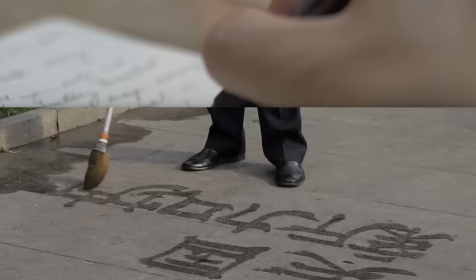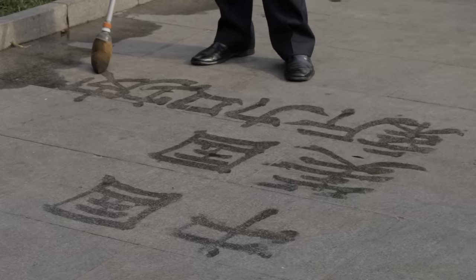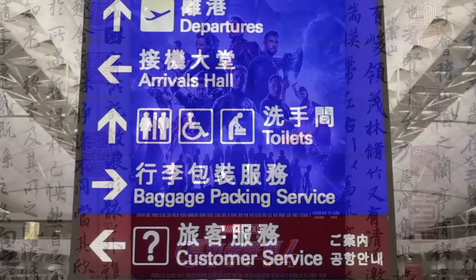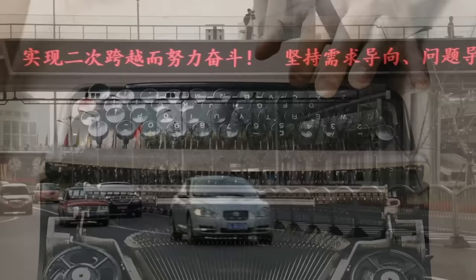In Chinese, on the other hand, how you write a word has nothing to do with how you pronounce it. Instead, each word is represented by a single character, or in some cases a combination of two or three. Because just about every word has its own squiggly representative, Chinese has more characters than an Avengers movie. When it became popular to push buttons to make words, countries like China with character-based languages found themselves in a tough spot.